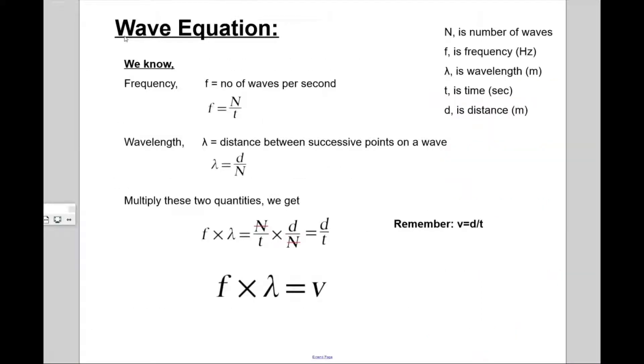The next topic in this unit is wave equations. So we have discussed about the frequency and we have taken some questions related to that. We know that frequency is number of waves per second, or generally we can write F equals to number of waves N divided by the time taken to produce them T. And the wavelength, which is lambda, it is the distance between successive points on a wave, either the distance between two successive crests or between two successive troughs.